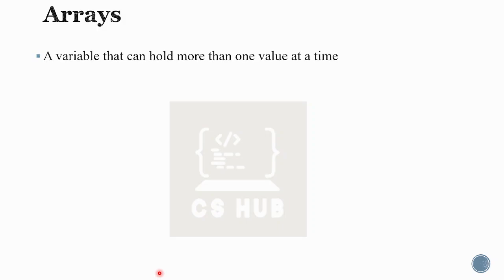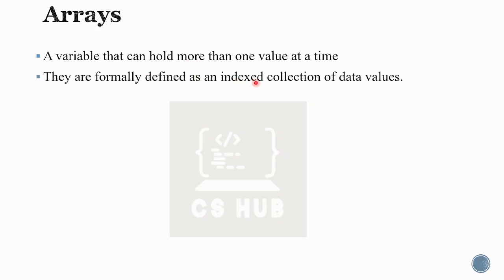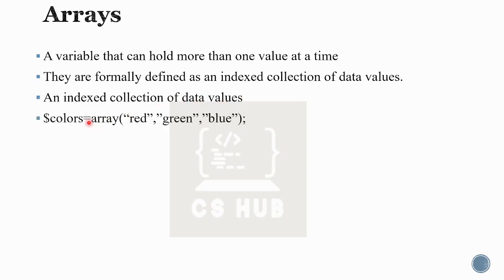We have 4 scalar data types and 2 compound data types. An array is a variable that can hold one or more values at a time, formally defined as an indexed collection of data values. In PHP, you use the array() function to create an array. For example: $colors = array('red', 'green', 'blue').